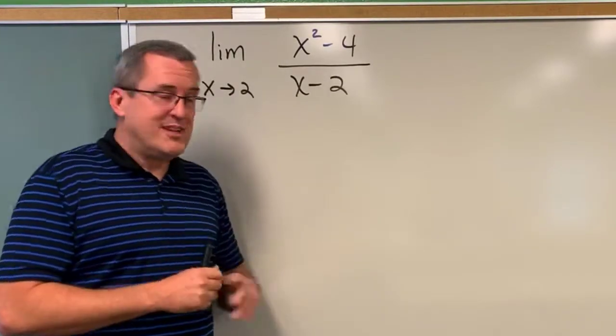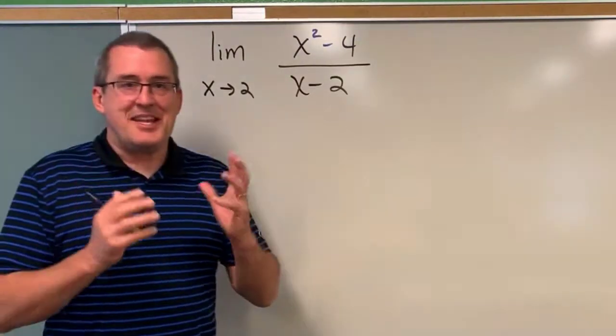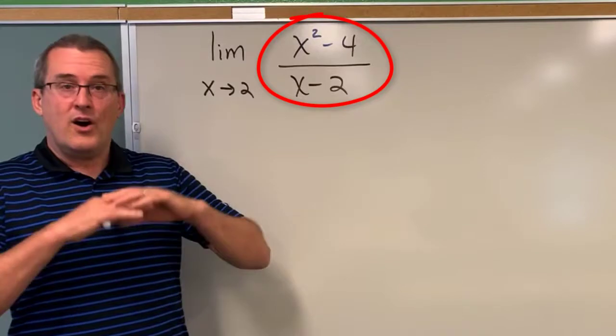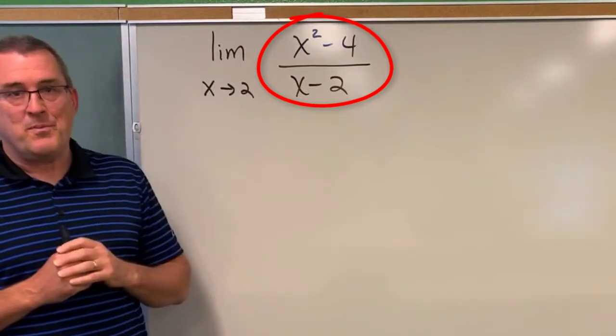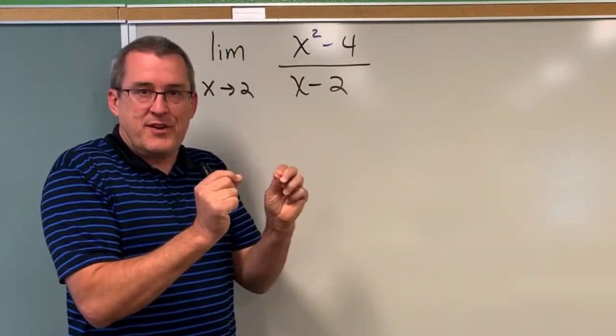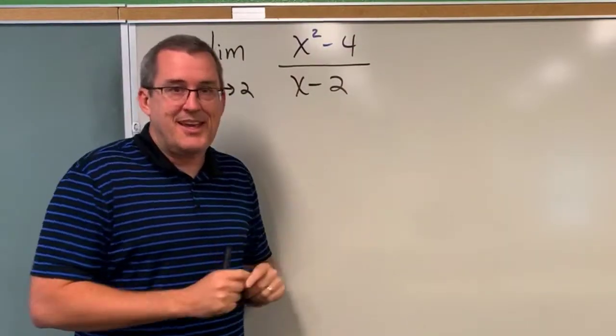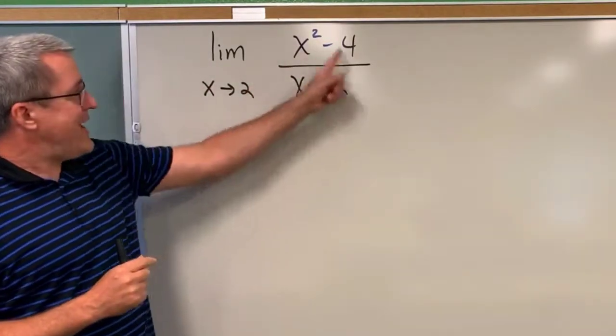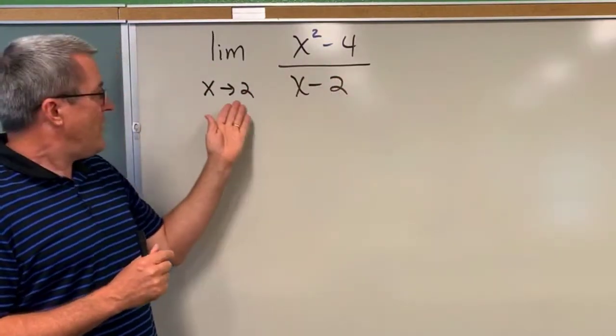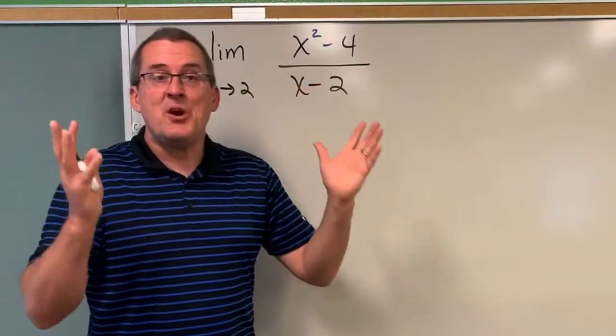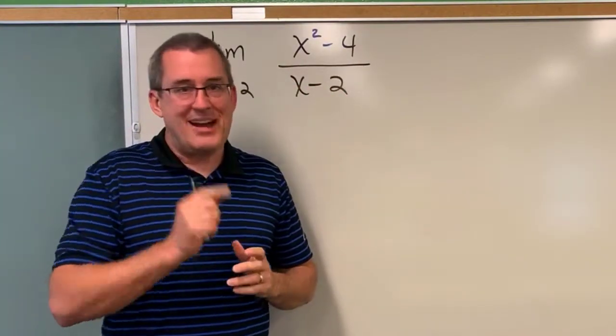So for example, in this case we're going to examine this rational function x squared minus 4 all divided by x minus 2, but what we want to think about is not the output of this function for a specific input value of x. In this case we want to know the behavior of this function when the input quantity, the x value, is just nearby 2 but not equal to 2.